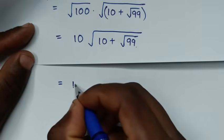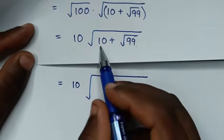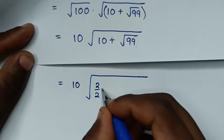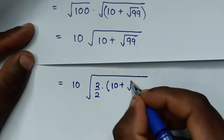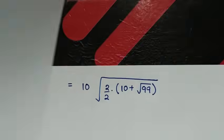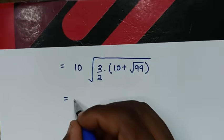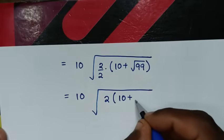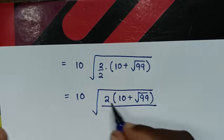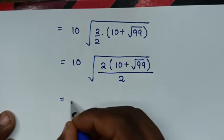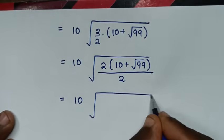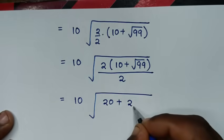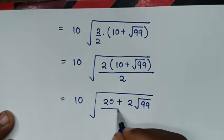In the next step, this equals 10 times the square root of (10 plus square root of 99). Expanding inside, we get the square root of 2 times (10 plus square root of 99), which gives square root of (20 plus 2 times square root of 99), all over 2.